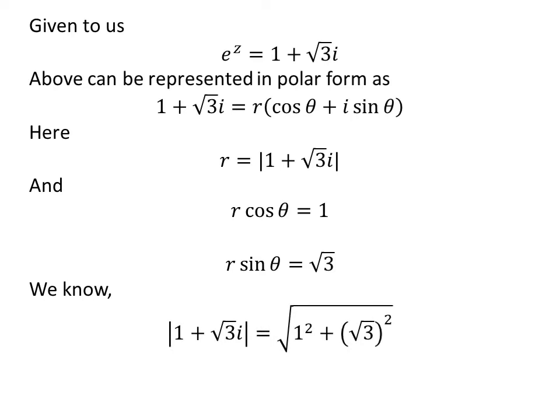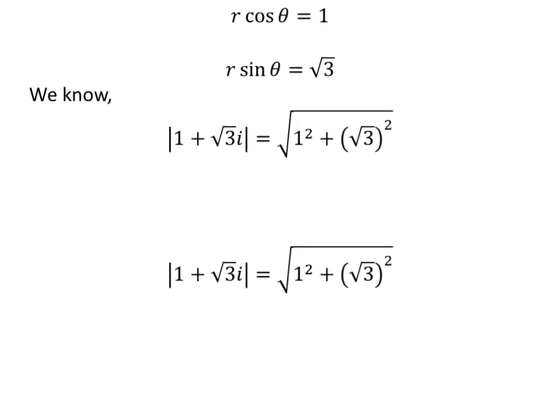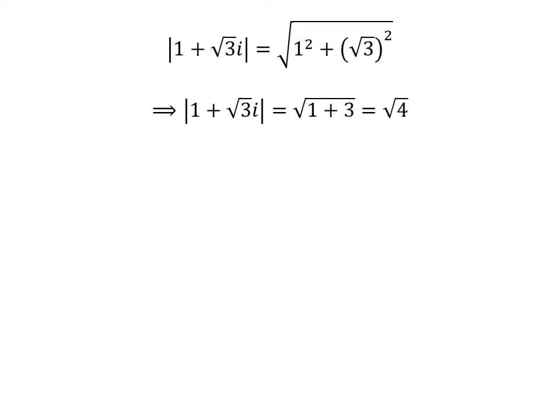As per the definition, the modulus of 1 plus square root of 3 times iota is equal to the square root of the square of 1 plus the square of square root of 3, which equals the square root of 4. Therefore, the modulus is equal to 2, which is equal to r.